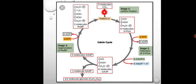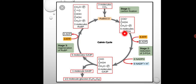Three molecules of atmospheric carbon dioxide get combined with RUBP — that is ribulose 1,5-bisphosphate — which is present in the plant cell. Carbon dioxide combines with RUBP and forms six molecules of PGA, that is phosphoglycerate, which is an unstable product. It immediately gets split into two sets of three-carbon compounds — three molecules each of phosphoglyceraldehyde.